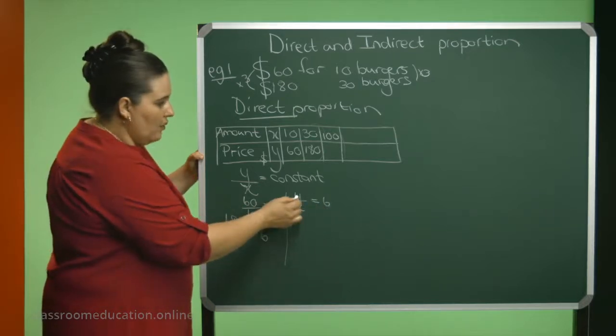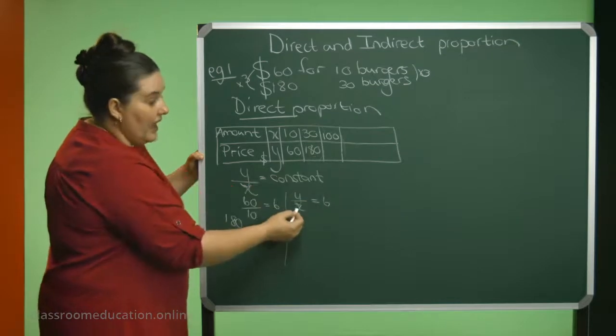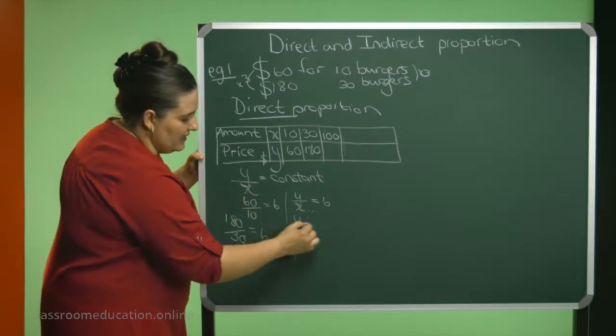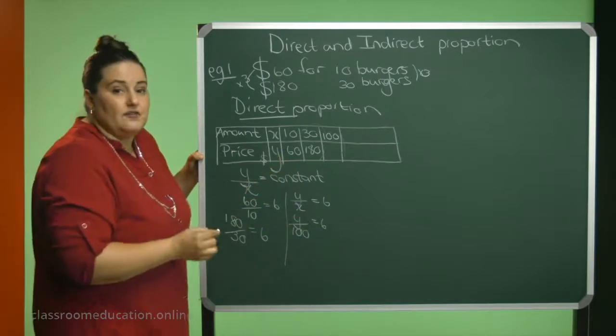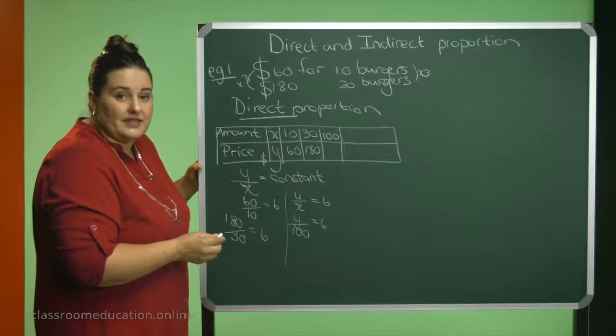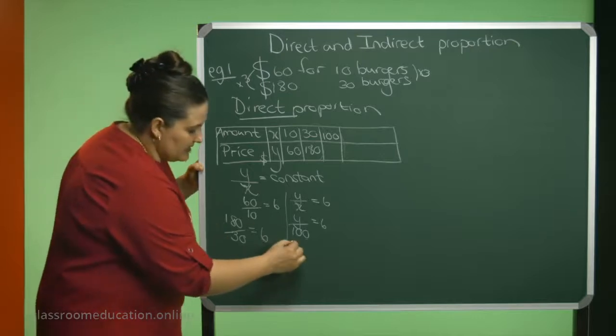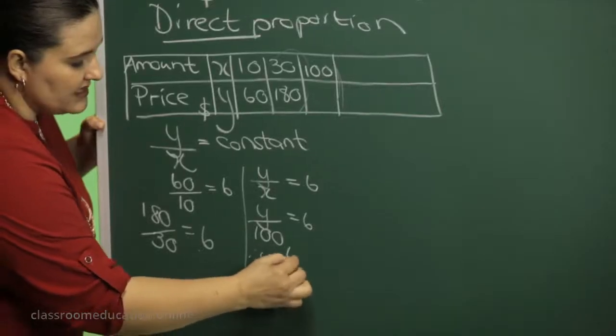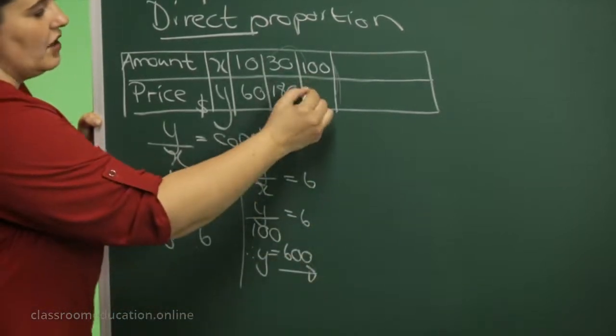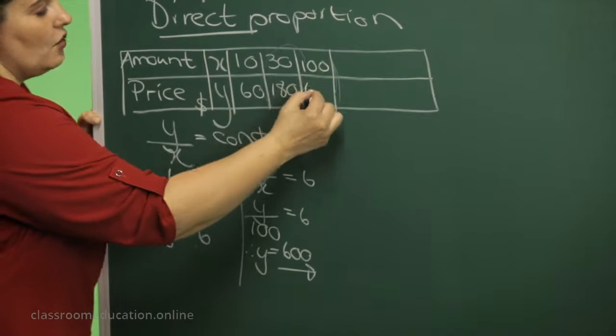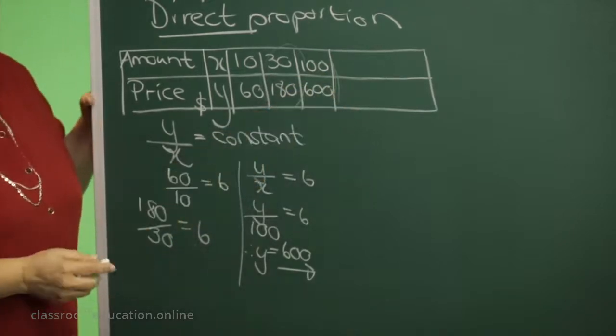I have the Y, no, I want the Y. I have the X, it's 100. So Y divided by 100 equals 6. And if you would like to solve the Y and get the Y alone, I can say Y equals 600. So 100 burgers will have a price of $600.